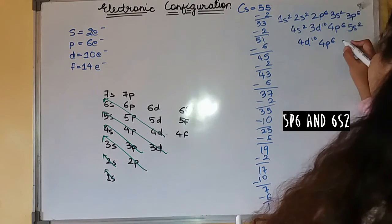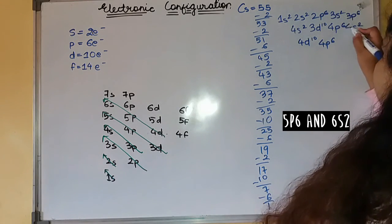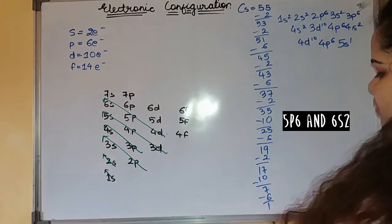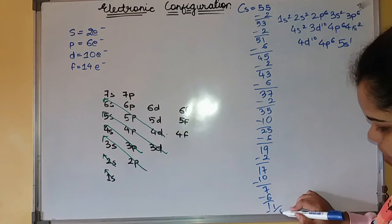Then 6s. This is 4f. 6s¹. So you are remaining with 0.